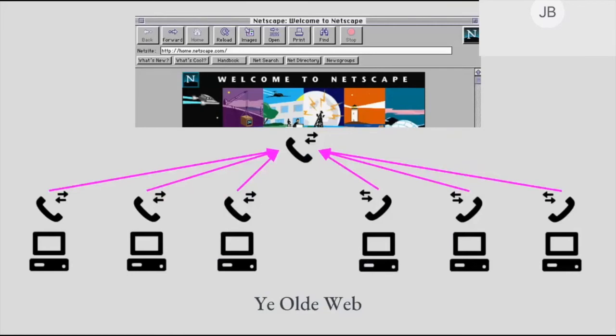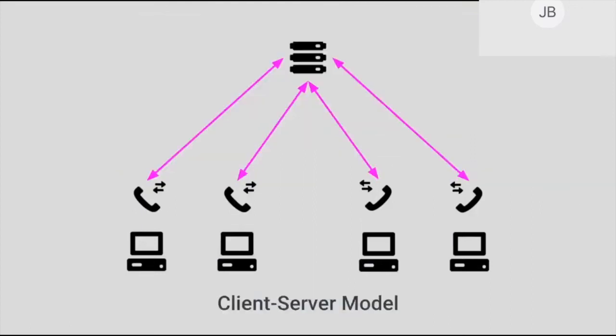Clearly, we need an architectural model that can accommodate many, many machines accessing the same content at the same time. Yes, it's the client-server model. You, the browser of the web, are the client, and the place where the web lives is the server, which has specialized hardware and software to make handling thousands of concurrent connections possible. And this, folks, is still the architectural model of choice for roughly 90% of today's Internet.